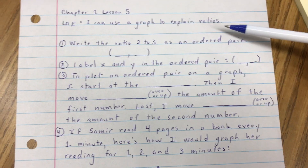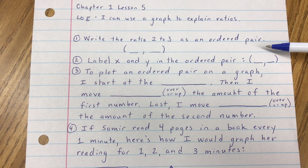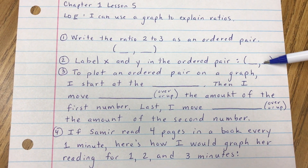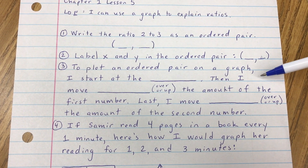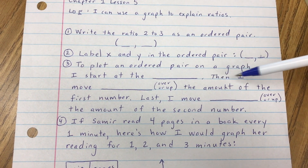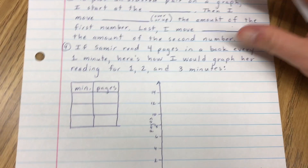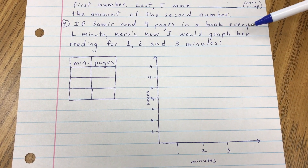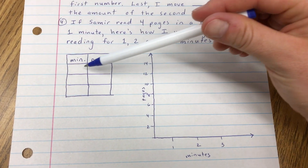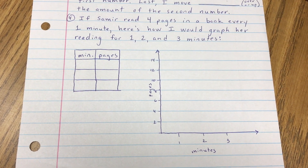This is the Chapter 1, Lesson 5 Reflection: I can use a graph to explain ratios. First, write the ratio 2 to 3 as an ordered pair and label X and Y. To plot an ordered pair on a graph, start at the origin, then move over or up the amount of the first number, then move over or up the amount of the second number. For number 4: if Samir read 4 pages every 1 minute, fill out the table and plot the 3 points on the graph for 1, 2, and 3 minutes.